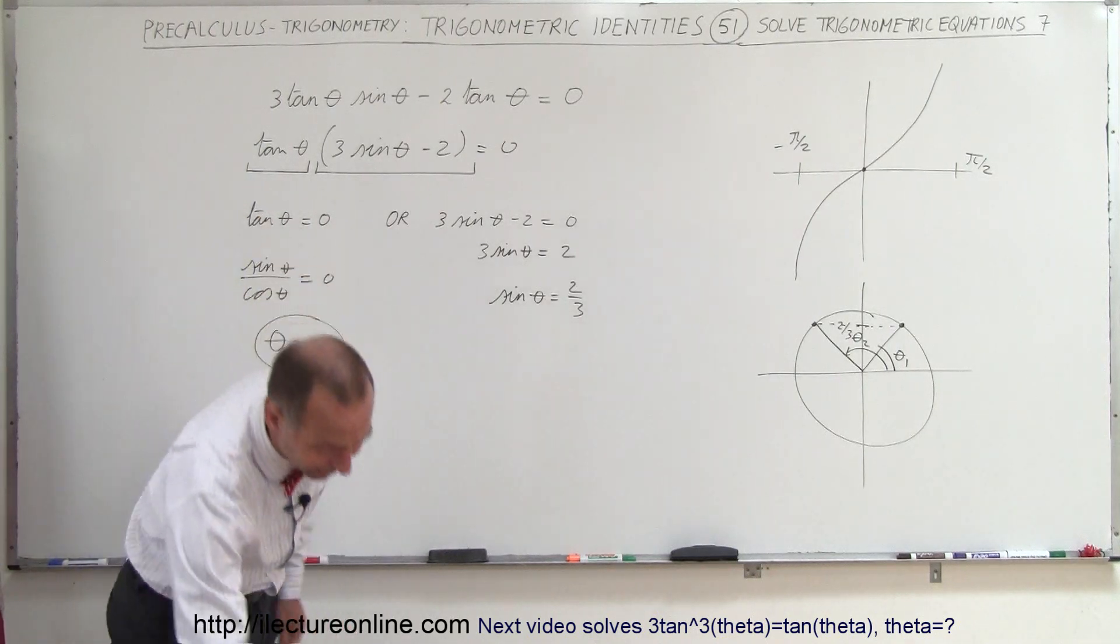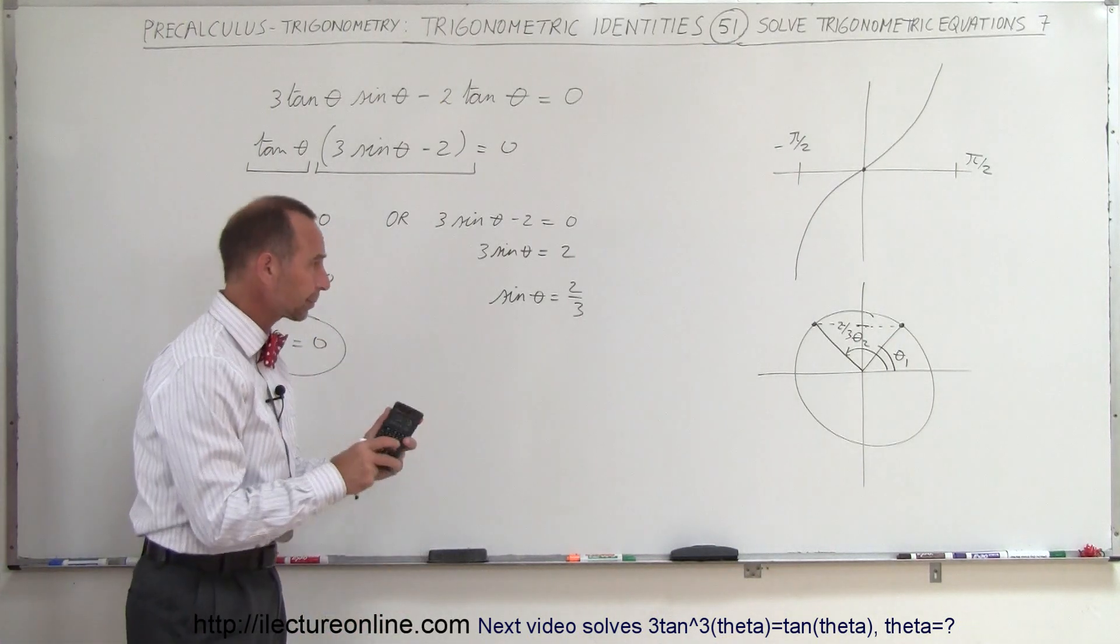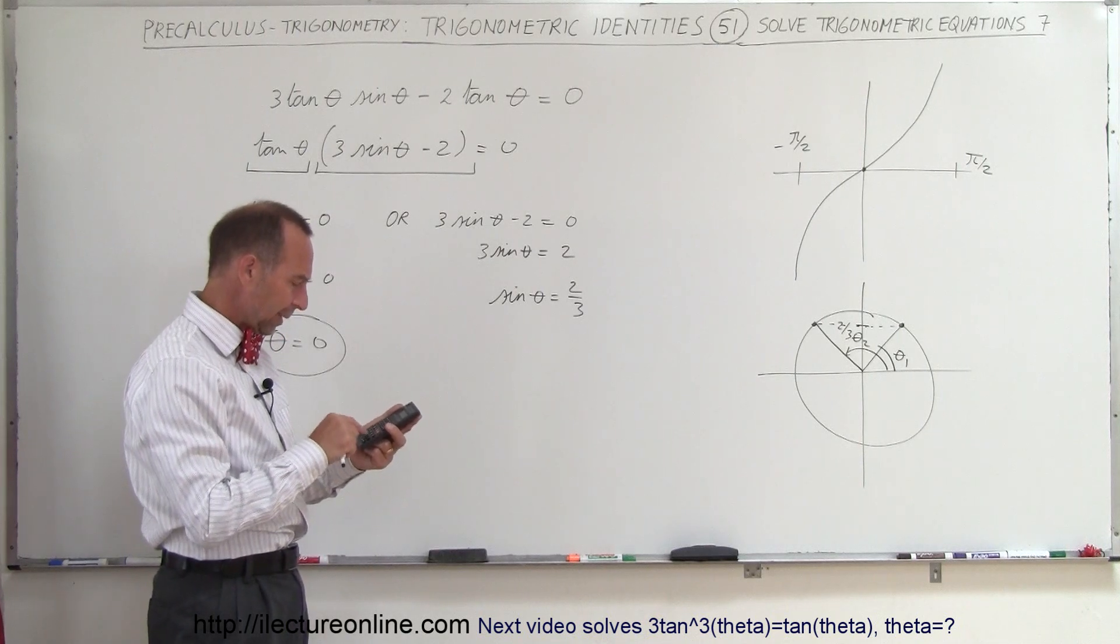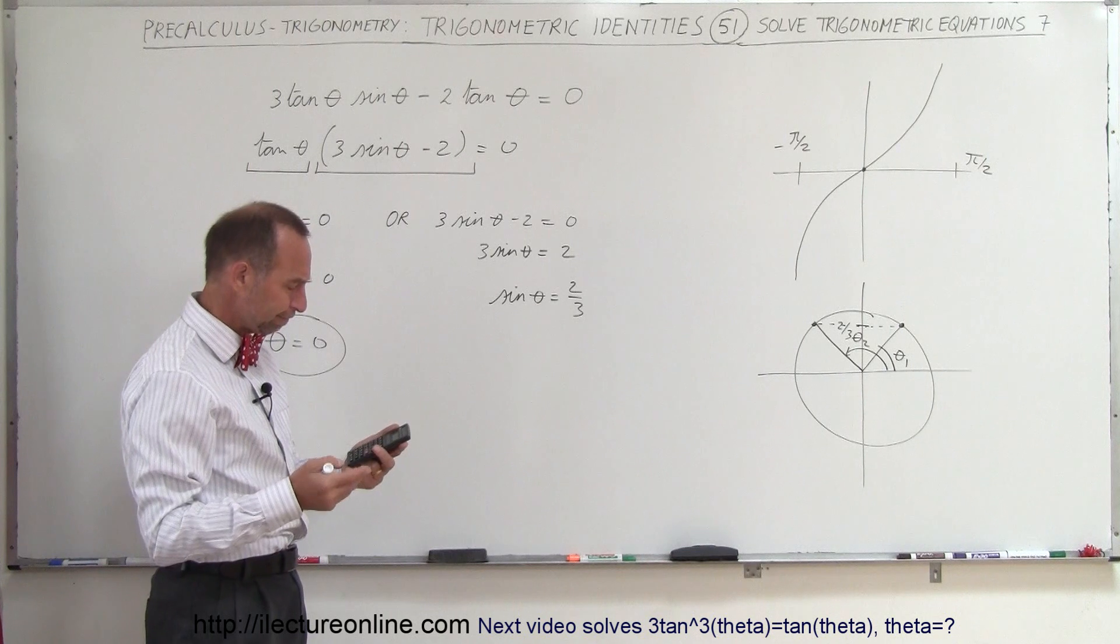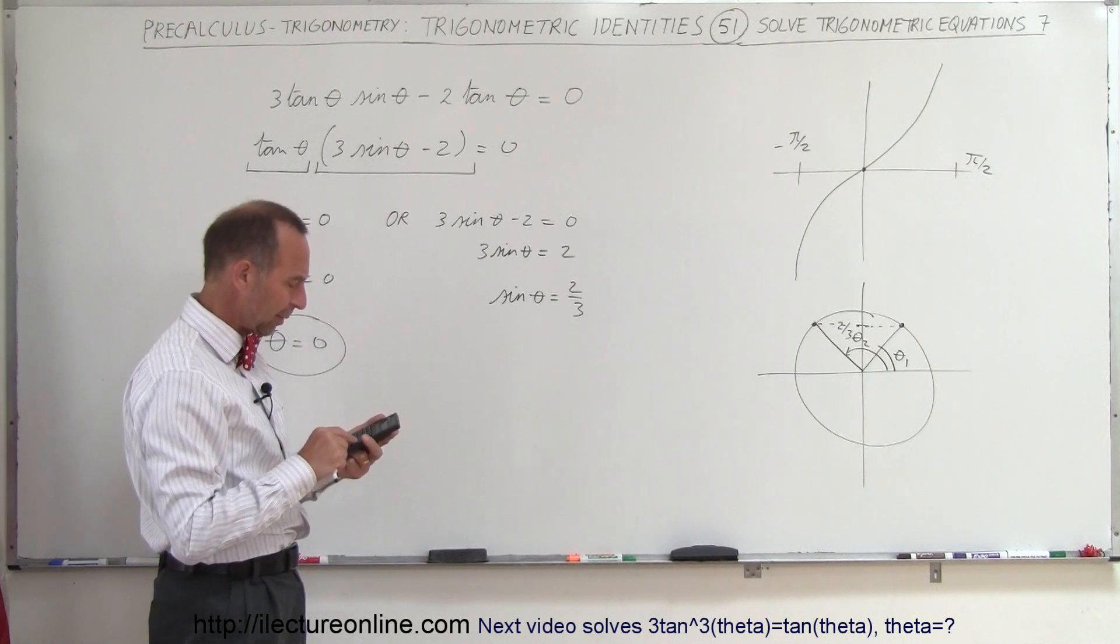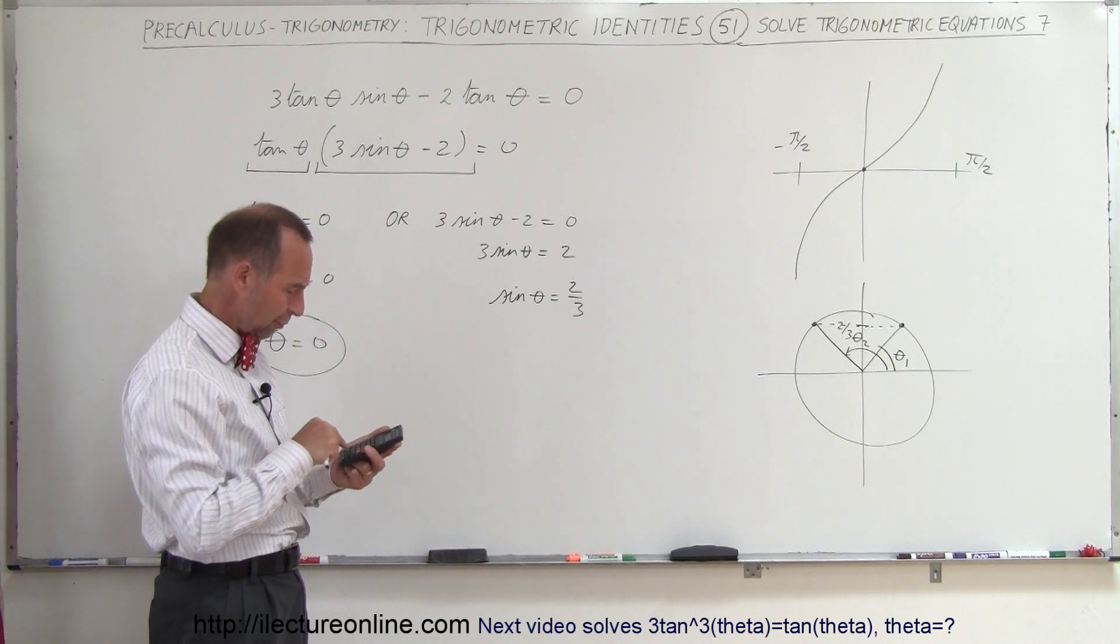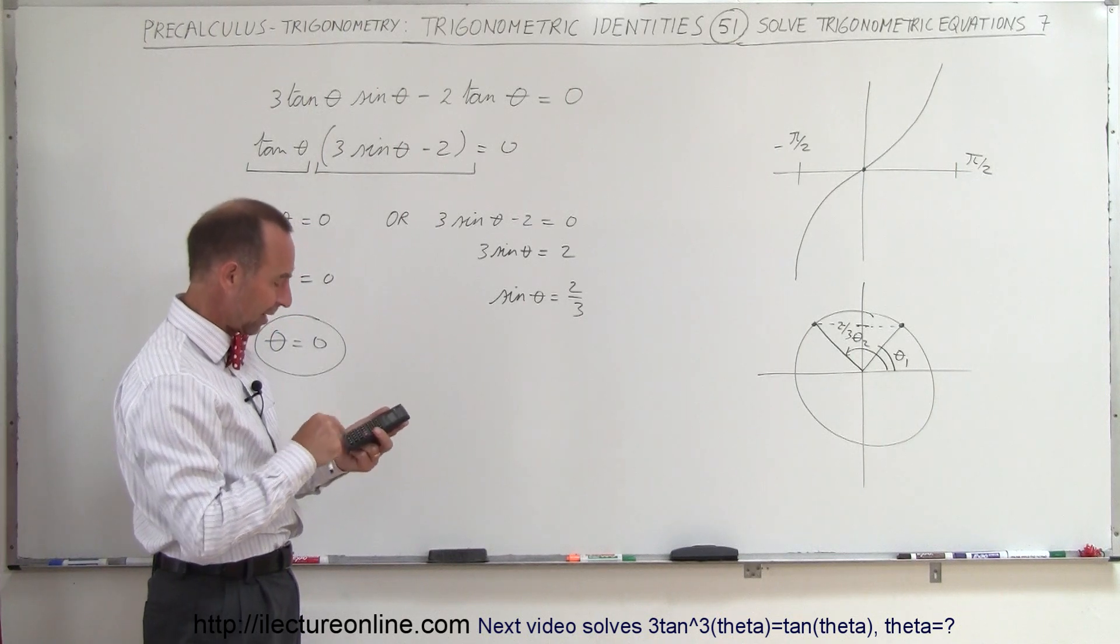Now we probably need a calculator to figure out what that angle is. So two divided by three, take the sine of that. Let me convert my calculator to degrees, that's probably a little bit better to work with. So mode four equals, so let's try it again.